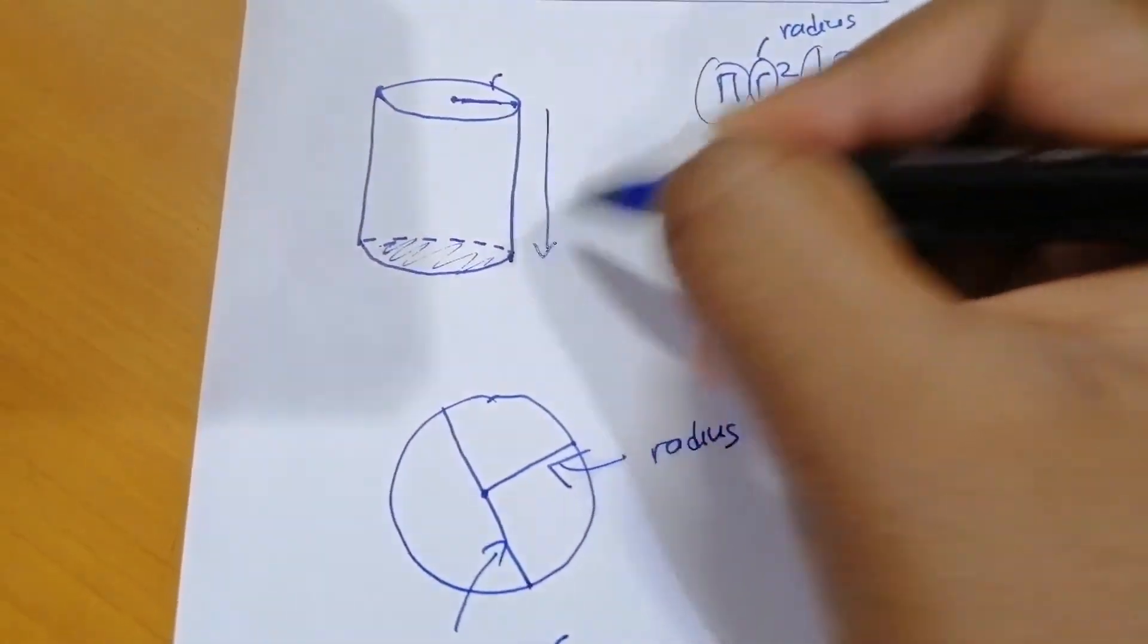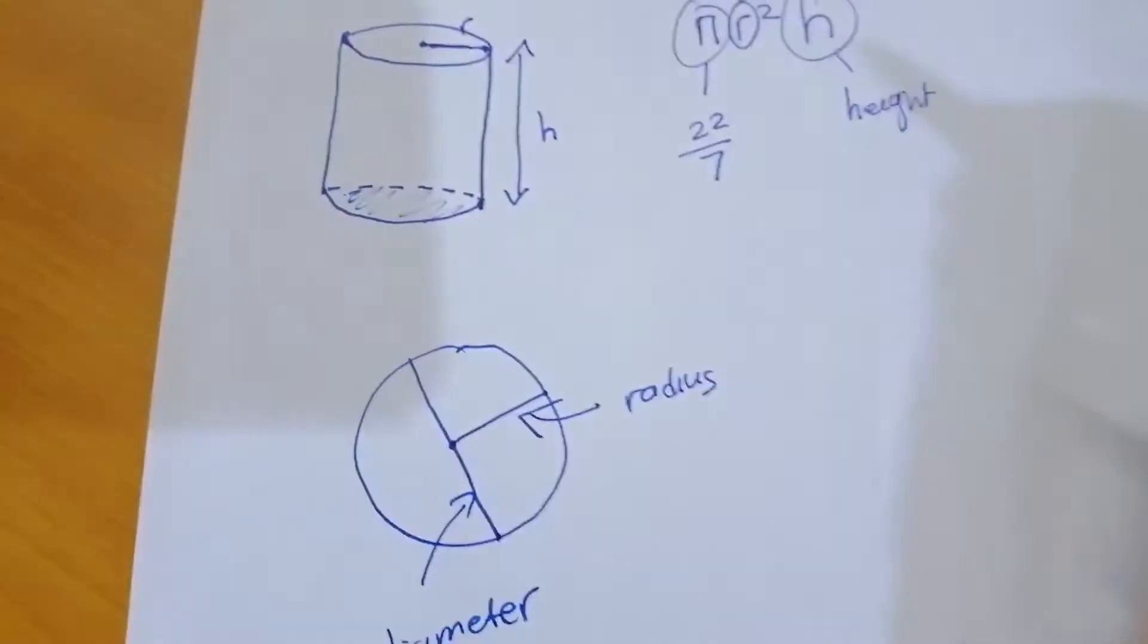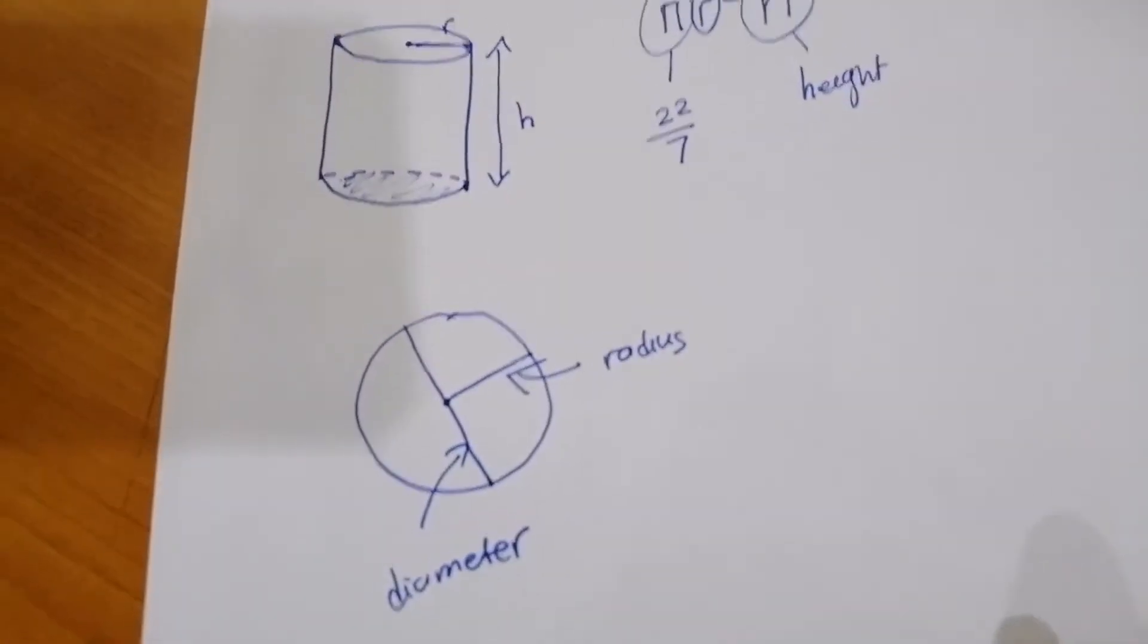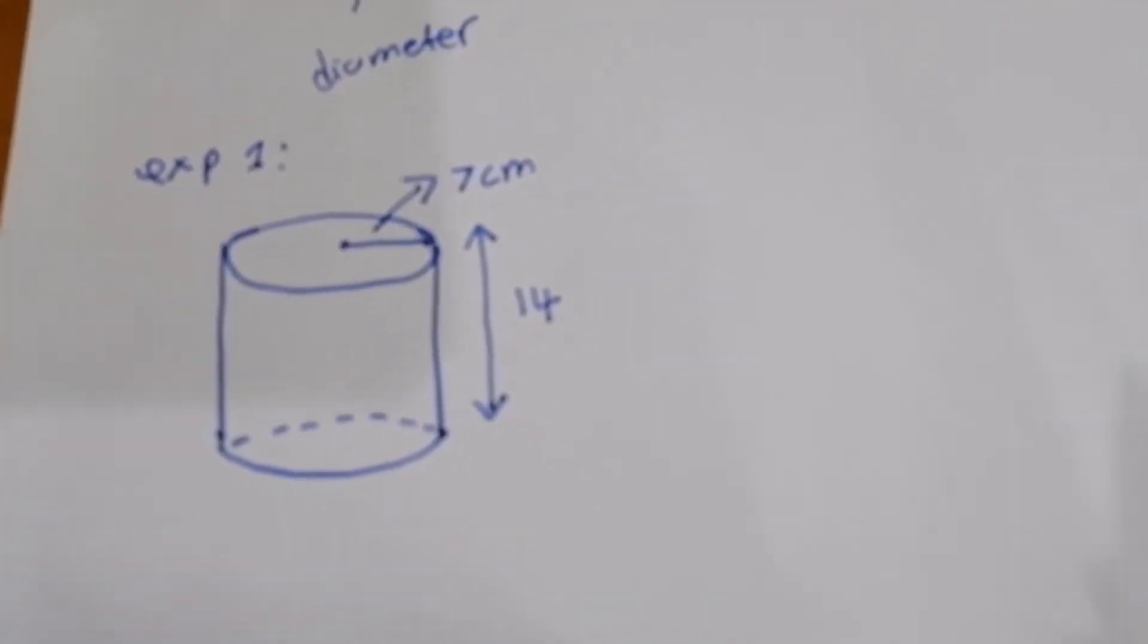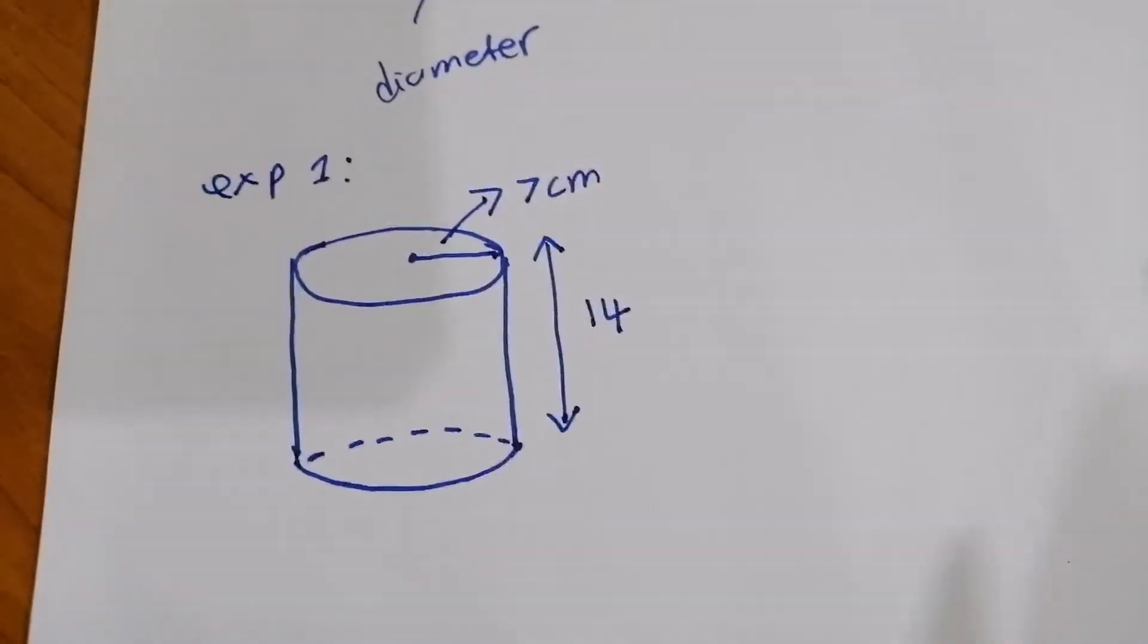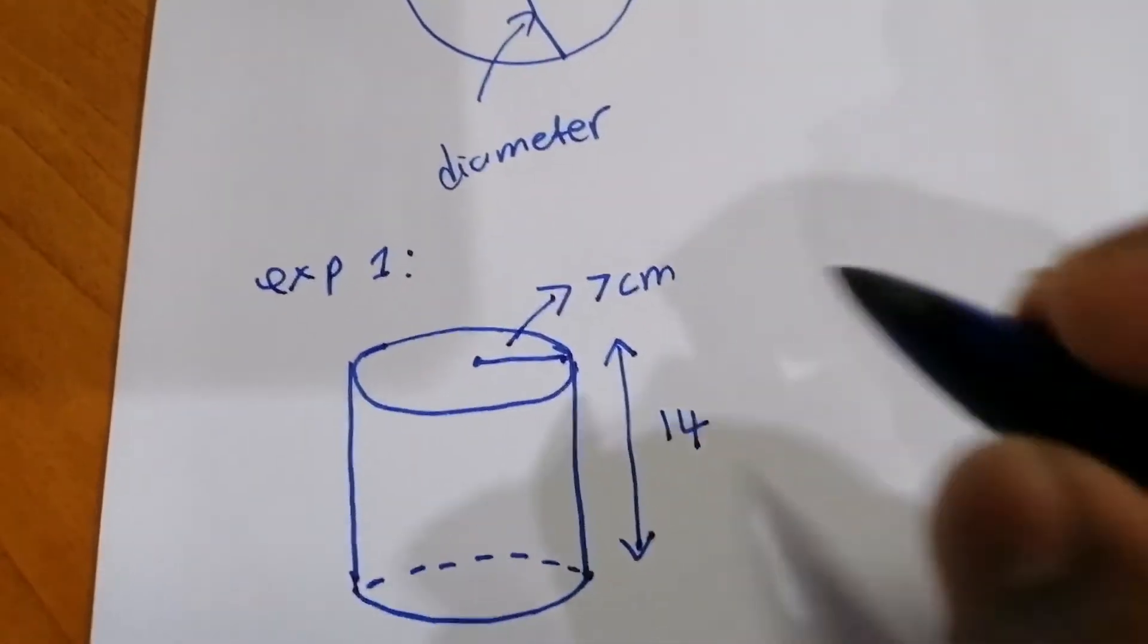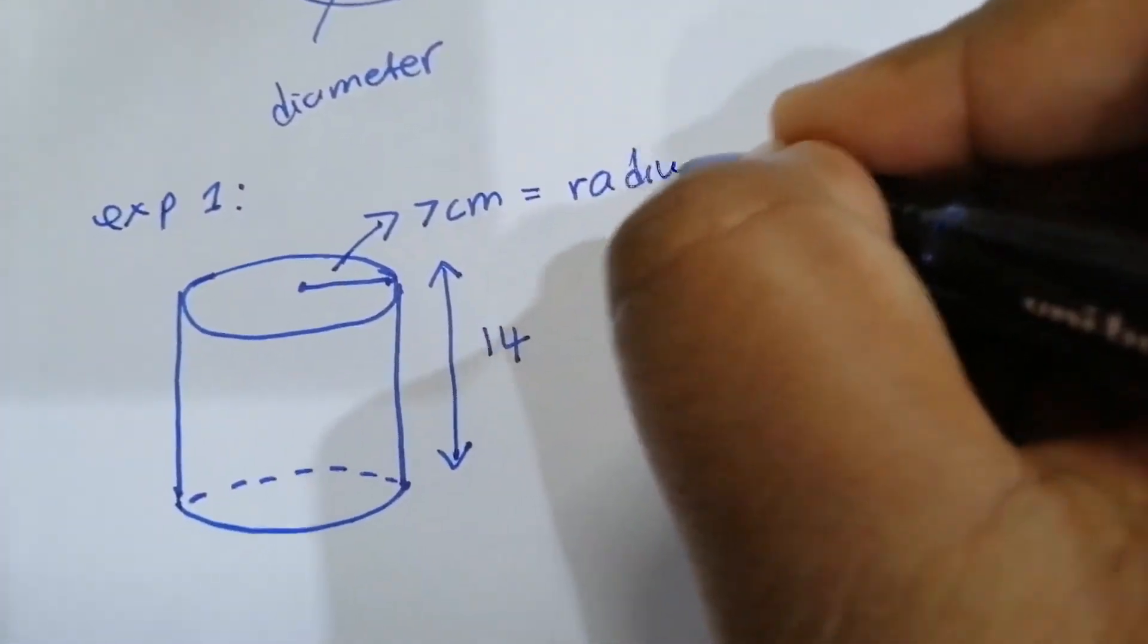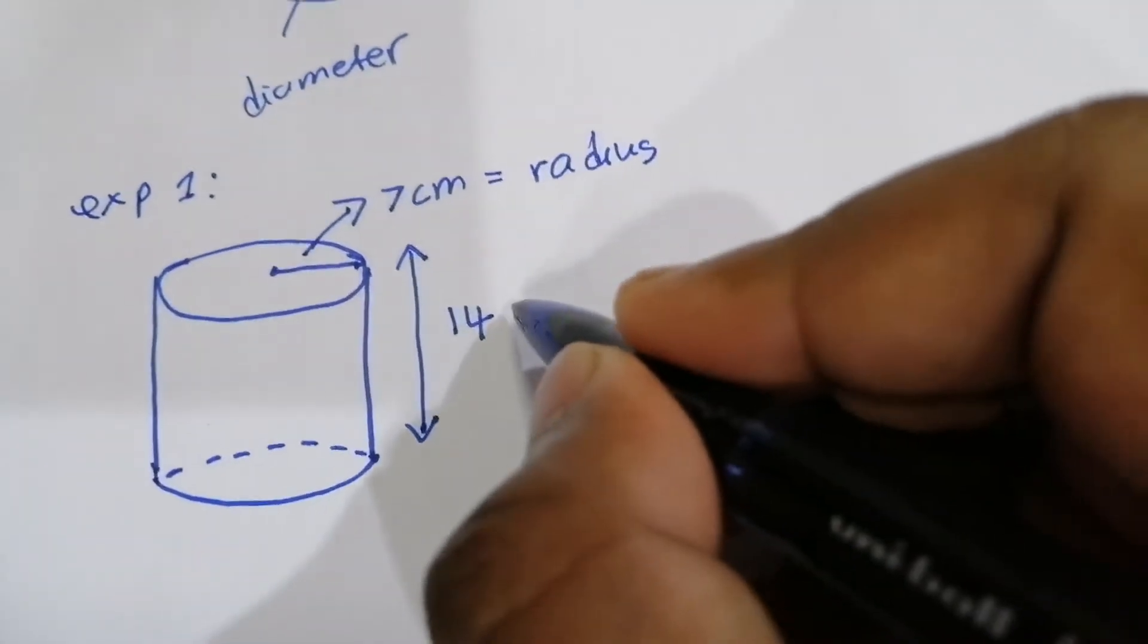And this is the height. Now we try an example. In this question, 7 is the radius.